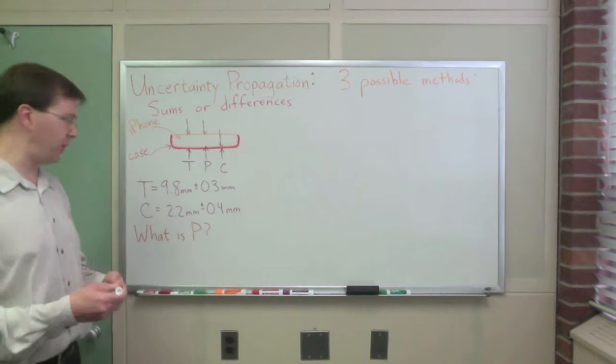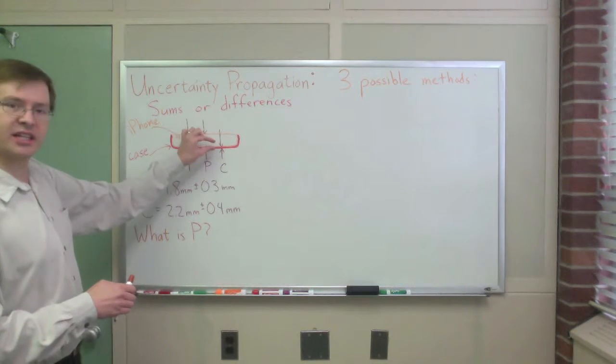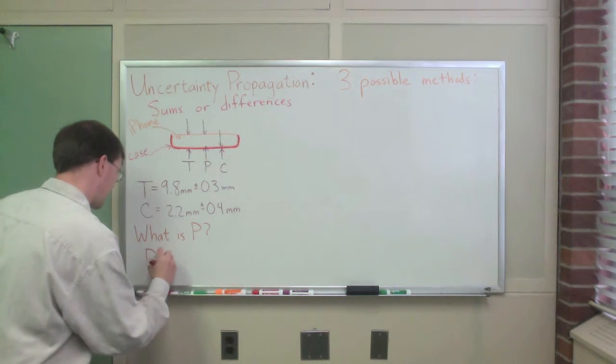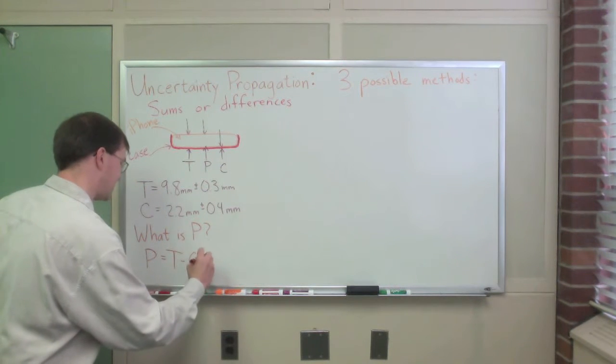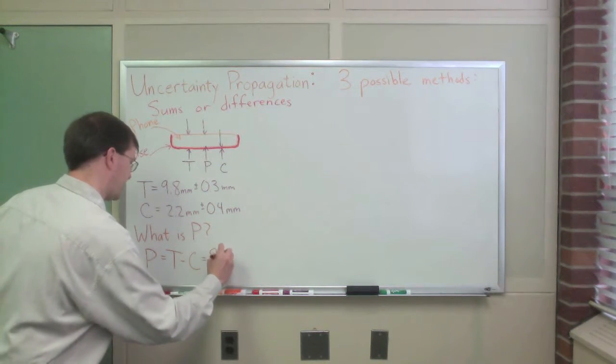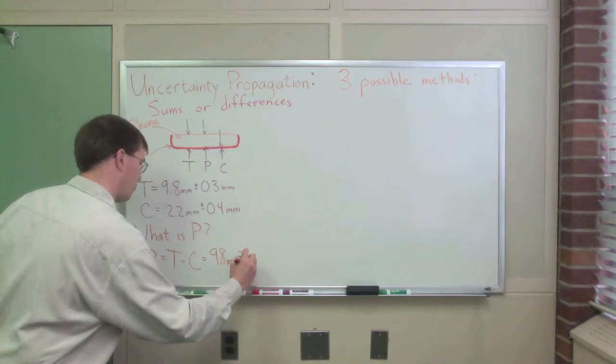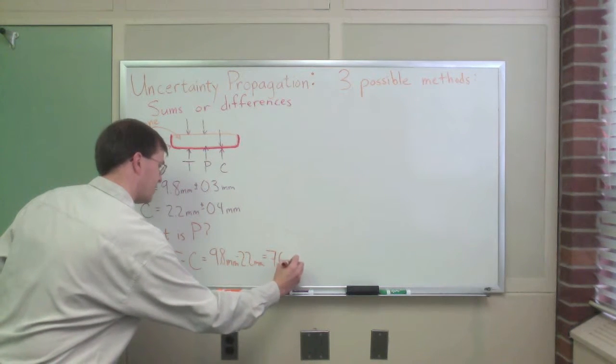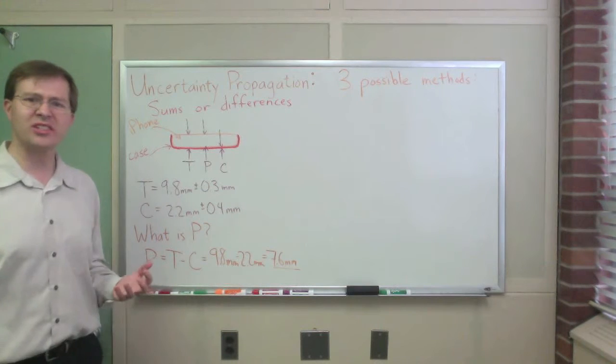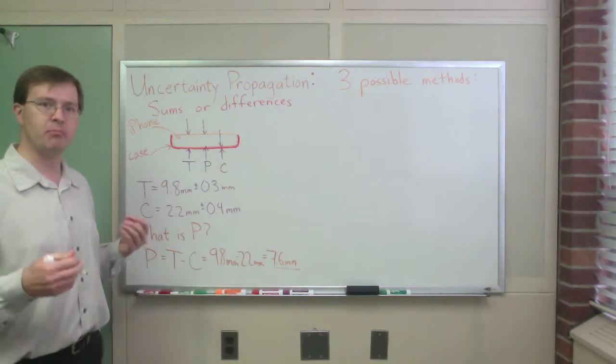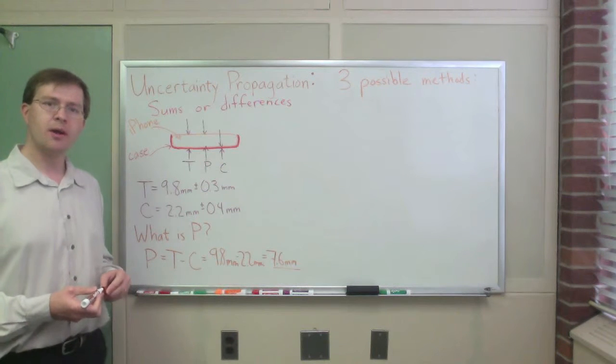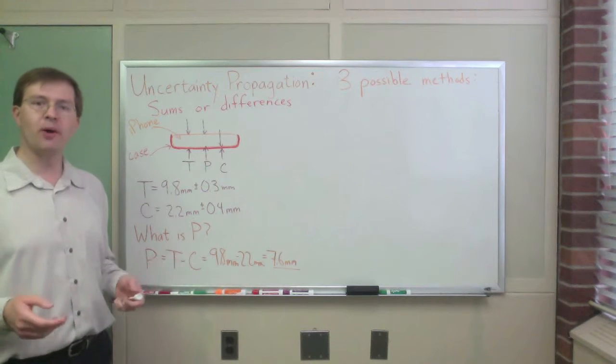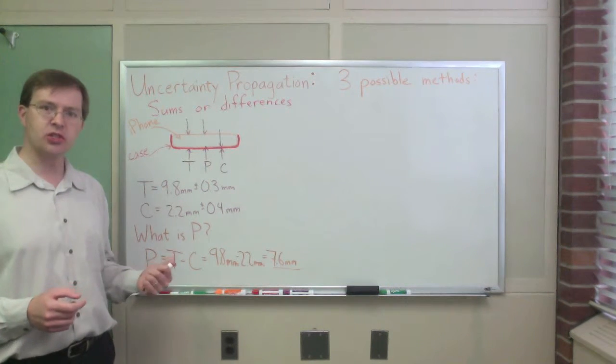Well, the answer itself is going to be simple. The thickness of the phone plus the thickness of the case should equal the total thickness. So the phone thickness has to equal the total thickness minus the case thickness. That's 9.8 millimeters minus 2.2 millimeters, or in other words, 7.6 millimeters. That's obviously going to be the answer I have, the base value for the thickness of my phone. But the question is, how do I estimate the uncertainty in that 7.6 millimeters?